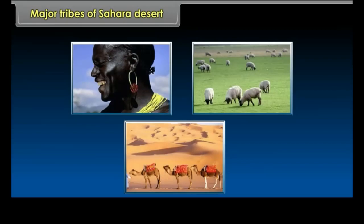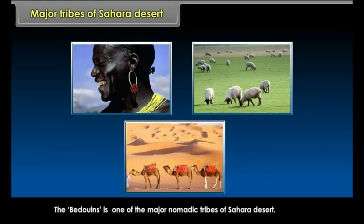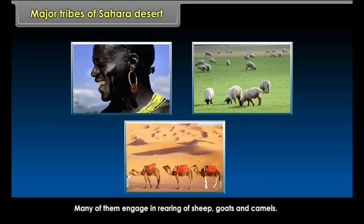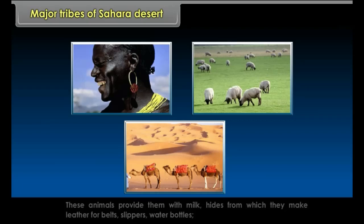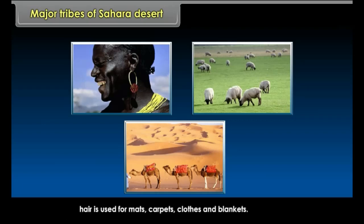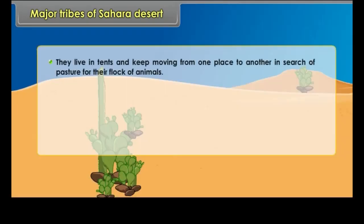Major tribes of Sahara Desert: The Bedouins are one of the major nomadic tribes of the Sahara Desert. Many of them engage in rearing of sheep, goats, and camels. These animals provide them with milk, hides from which they make leather for belts, slippers, and water bottles. Hair is used for mats, carpets, clothes, and blankets. They live in tents and keep moving from one place to another in search of pasture for their flock of animals.